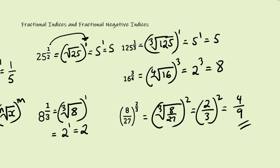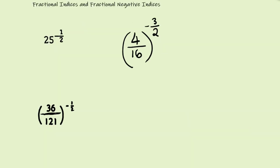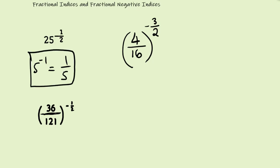I hope you've got the hang of fractional indices. If you like this video please hit the like button and consider subscribing. Next we're going to look at fractional negative indices. We've seen in negative indices examples that a negative index means we write it as 1 over the number — for example, 5 to the power of minus 1 is 1 over 5.